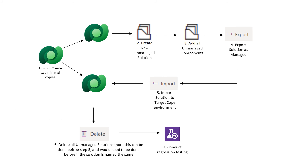Here is a visual representation of the steps to get to a managed state. Step one: create two minimal copies of production. Step two: create the new unmanaged solution. Step three: add all the unmanaged components to the solution. Step four: export the solution as managed. Step five: import the solution to the target environment using the convert to managed property. Step six: delete all the unmanaged solutions. Step seven: conduct regression testing.